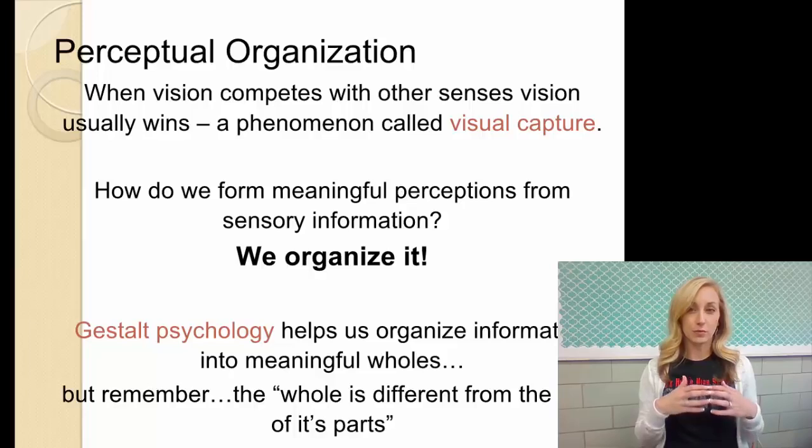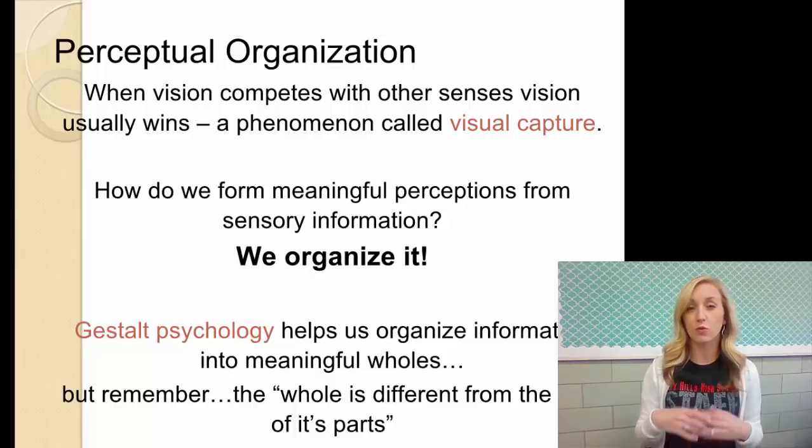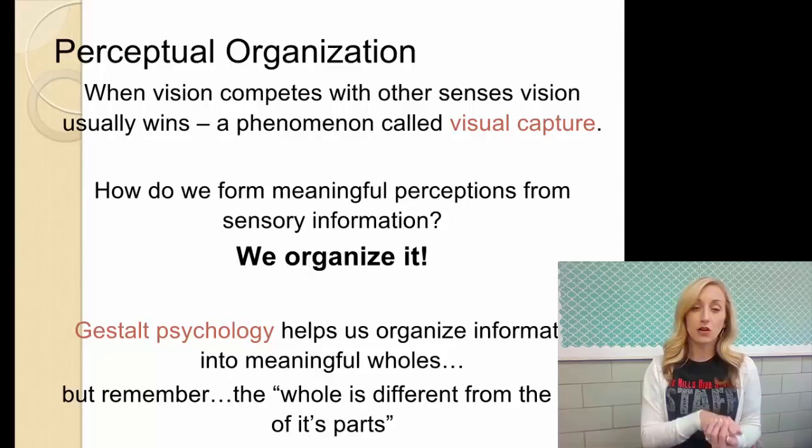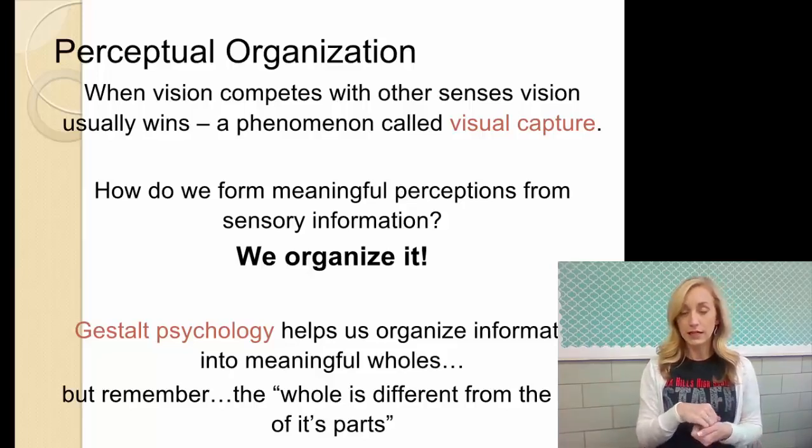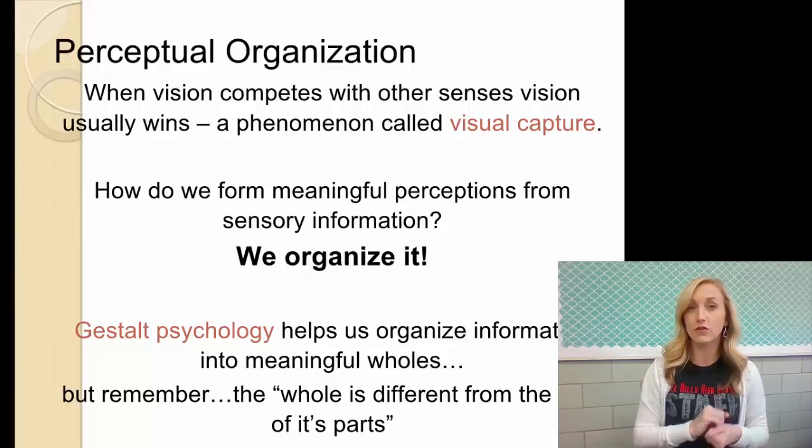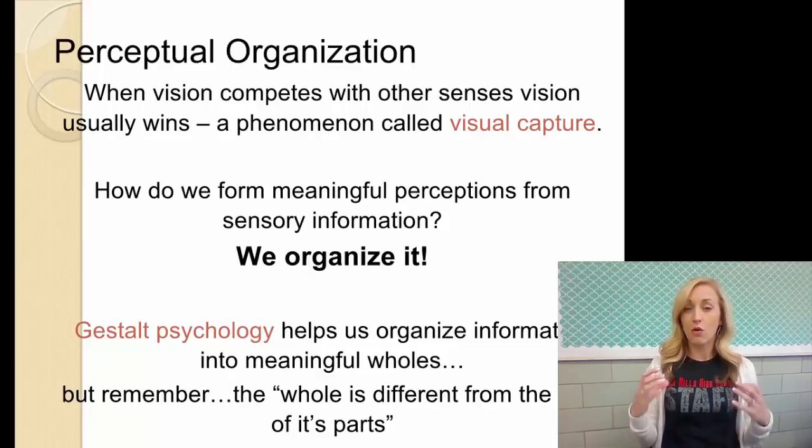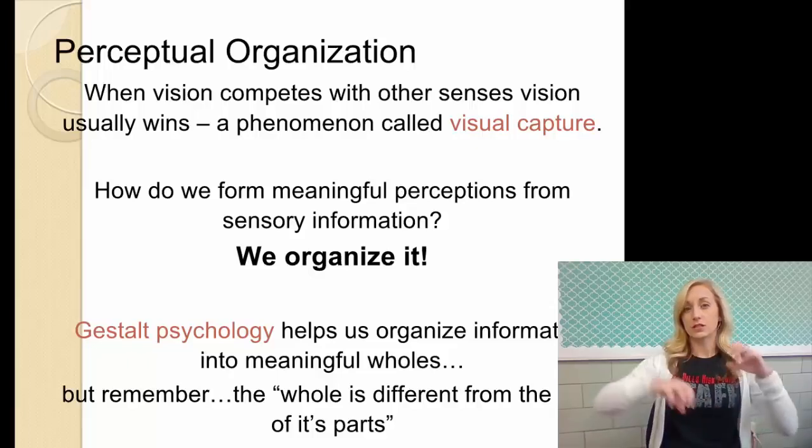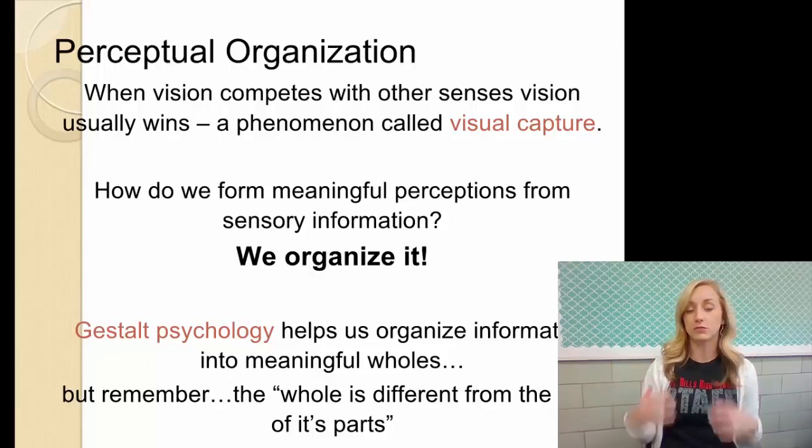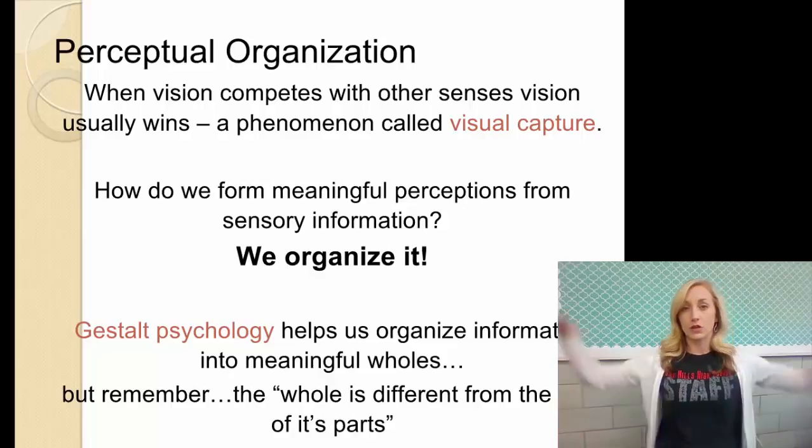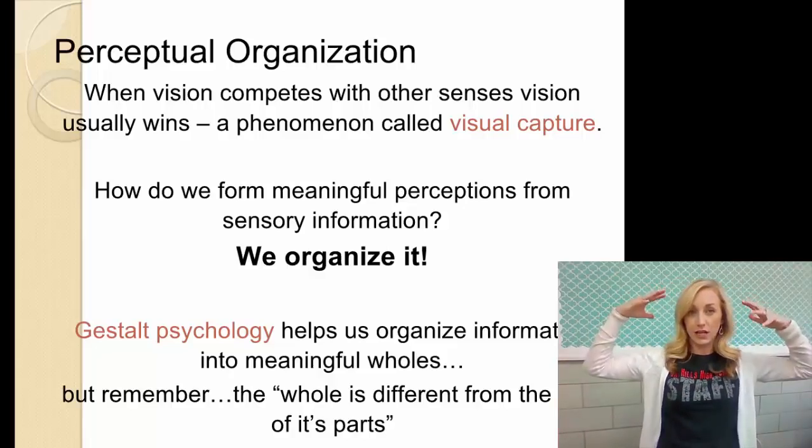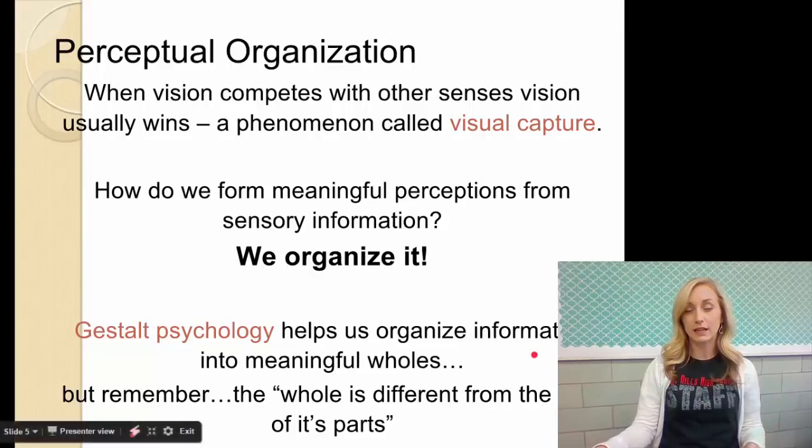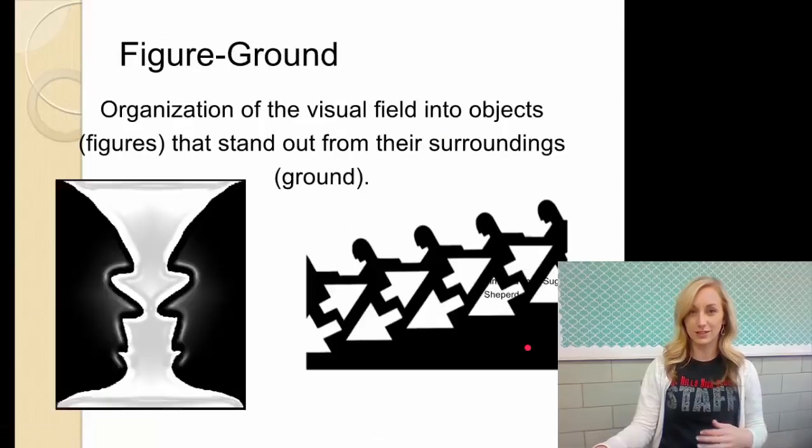So how do we form meaningful perceptions from sensory information? Well, we organize it. And gestalt psychology, which we talked about way back in Unit 1, that's what helps us organize information into meaningful wholes. So remember, the whole is different from the sum of its parts. That's kind of the catchphrase of gestalt psychology. So the sum of its parts could be one thing, meaning we are sensing one thing, but the whole that we perceive is different and therefore could be faulty. So just recognizing that your perceptions could be wrong is a good step forward in our understanding in psychology.